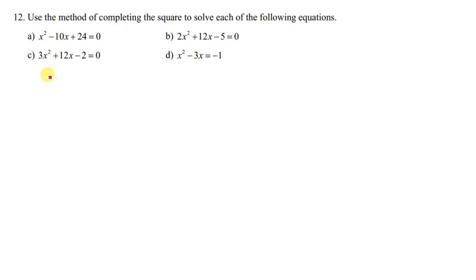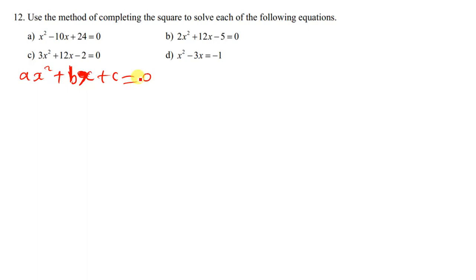Completing the square method is one of the simplest methods to solve quadratic equations. The first thing you need to know is that the general form of the quadratic equation is ax squared plus bx plus c is equal to zero. This is the general form of quadratic equations.